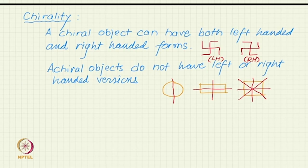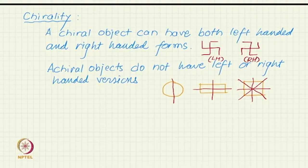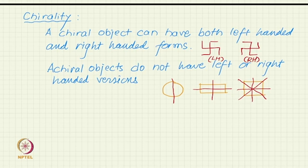If an object possesses a mirror plane, then when you reflect it, the reflected version will be superimposable by rotation on the original version. It does not matter which mirror you reflect in — one mirror is sufficient. Even if you reflect in a non-symmetry mirror plane, it will not change the object's chirality, because you can bring the moved object back to the original by translation or rotation. This is the distinction between chiral and achiral objects.